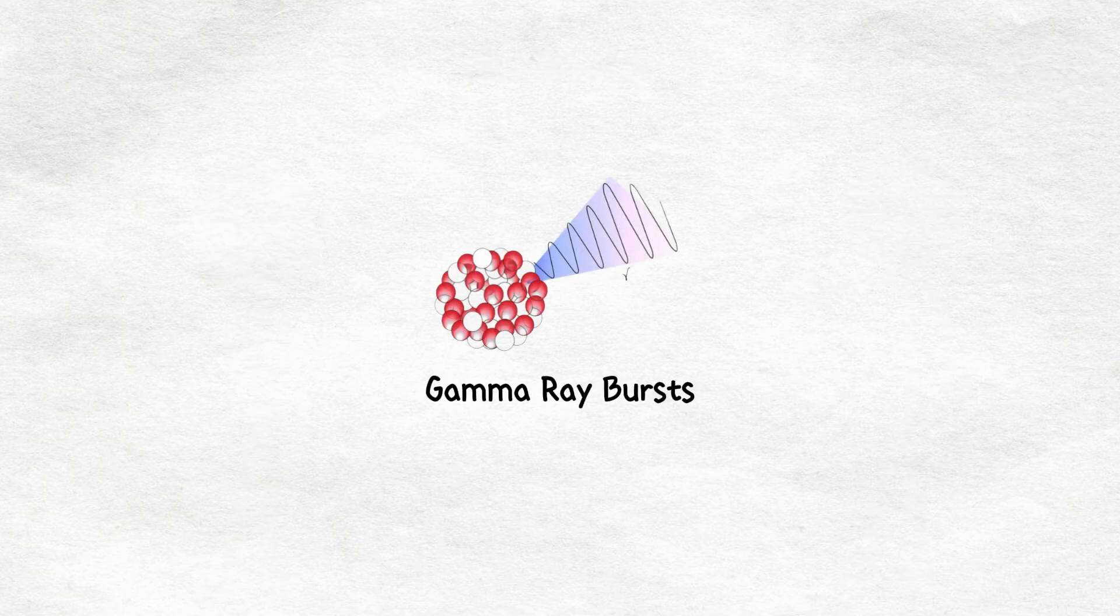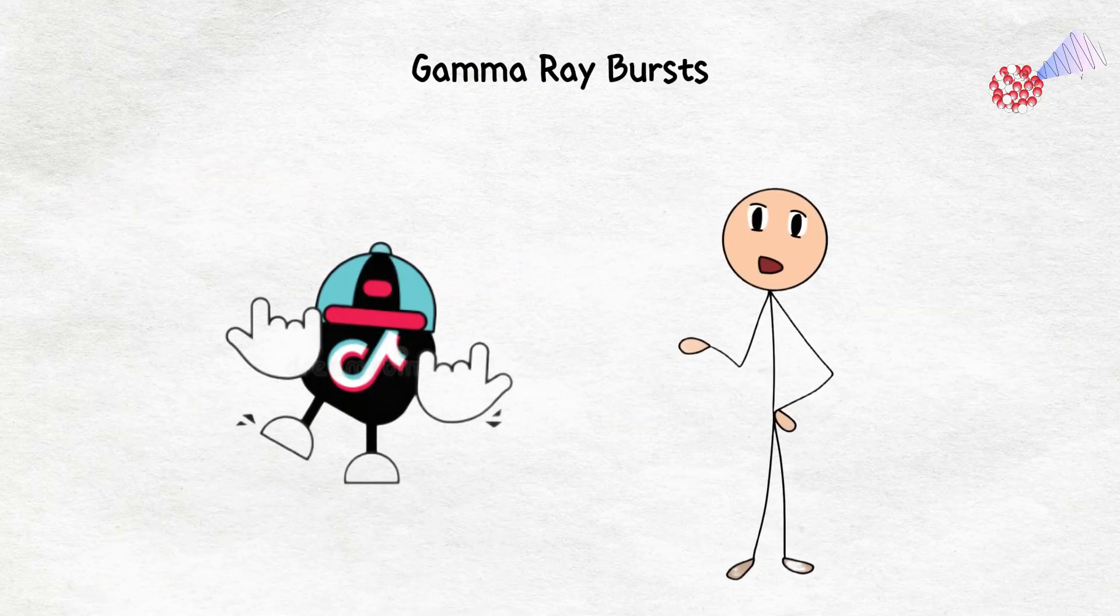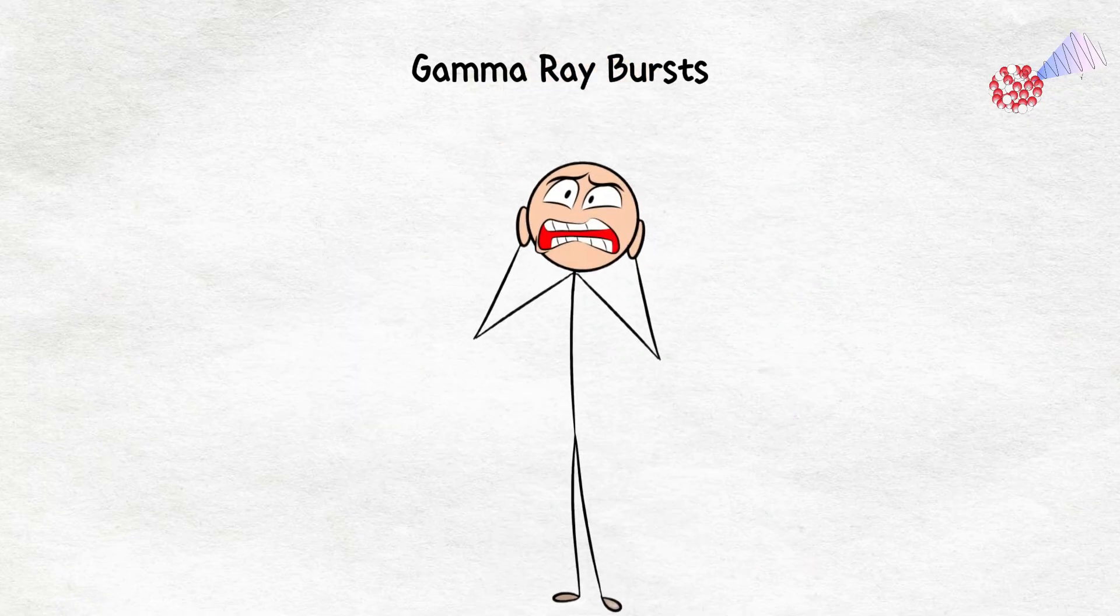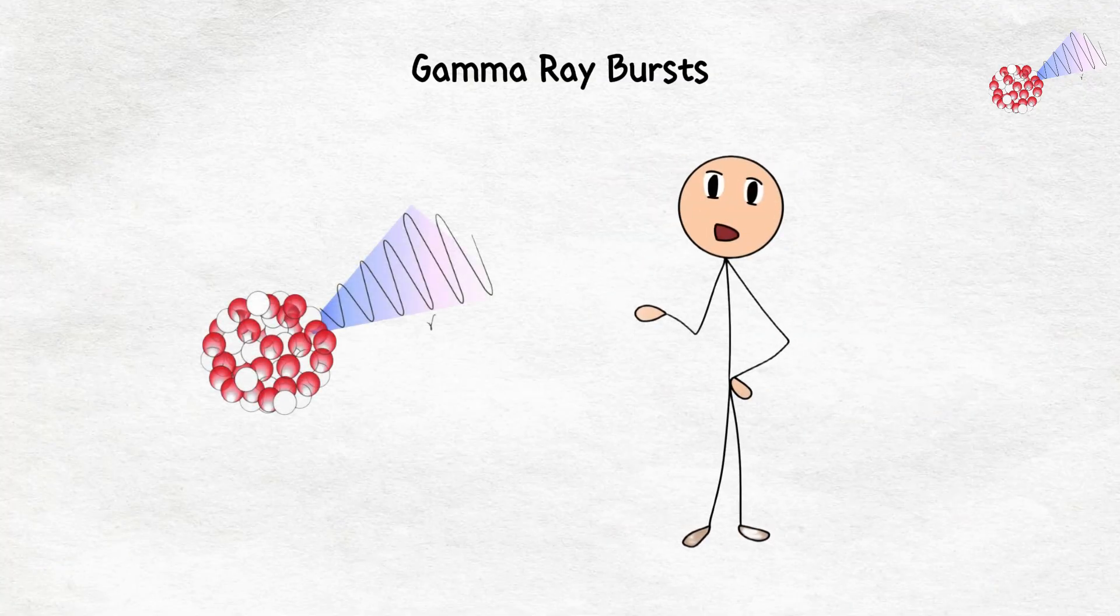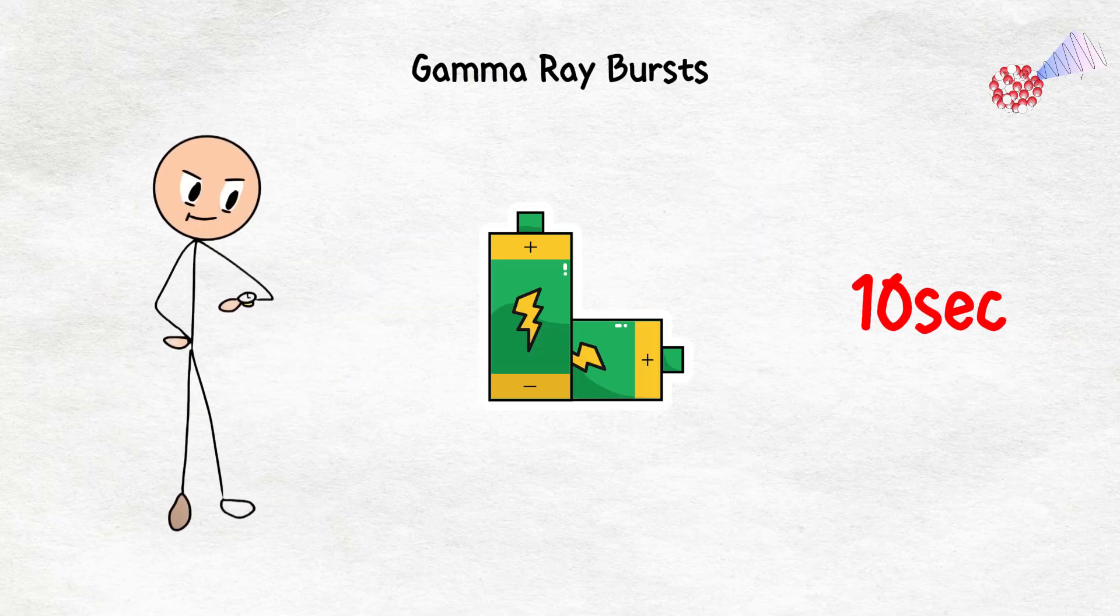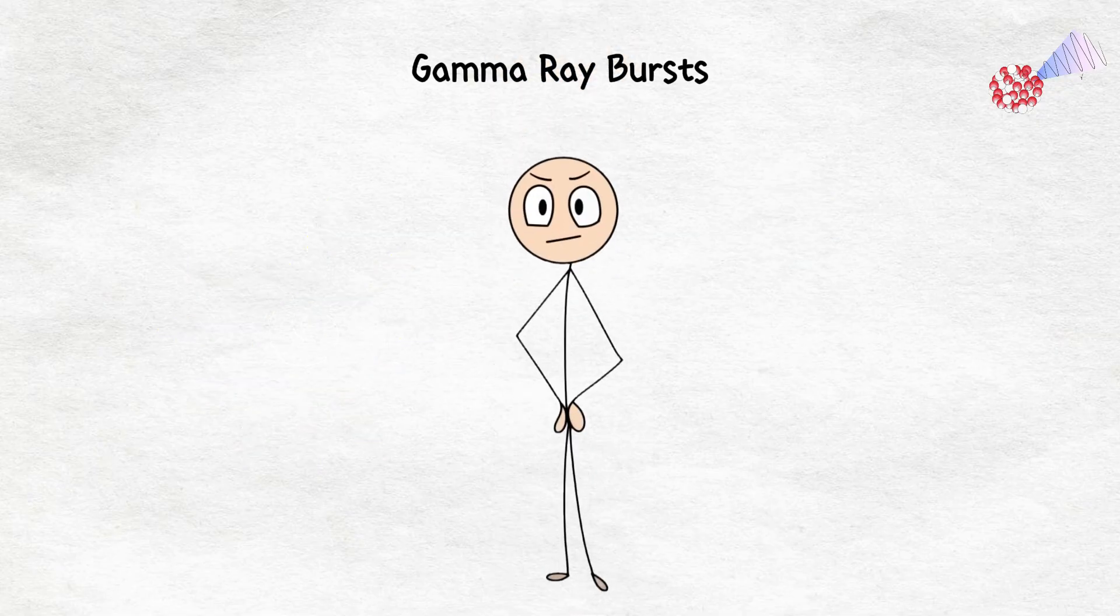Gamma ray bursts. Suppose you are just chilling here on Earth, scrolling through TikTok or binging a new show, when bam, a gamma ray burst hits. The sky lights up, and suddenly everything goes dark. Gamma ray bursts are these ridiculously powerful explosions that can release more energy in 10 seconds than the sun will in its entire 10 billion year lifespan. Let that sink in for a second.